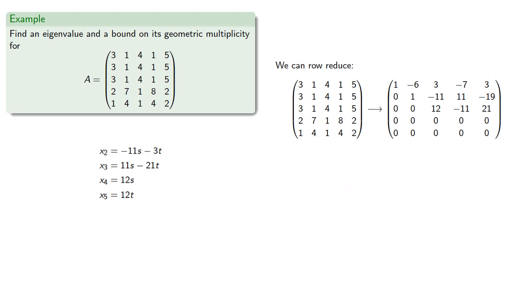And since we know x2, x3, x4, and x5, the first row gives us the equation, which we can rearrange.